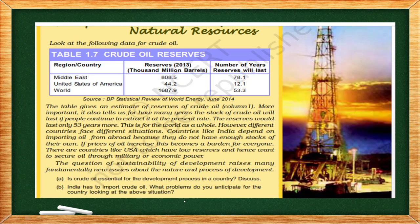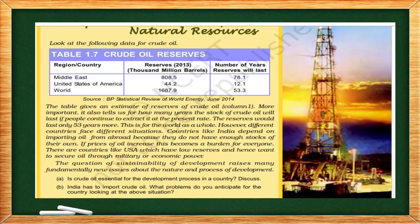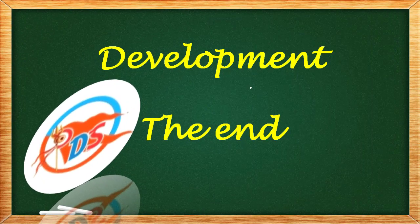This slide from your book shows natural resources data. In the Middle East, crude reserves are 808.5 thousand million barrels, which will last for 78.1 years. In the USA, oil reserves will last only 12.1 years, and for the whole world, only 53.3 years of oil reserves remain — after that, everything will be exhausted. That's why we must pursue development that saves resources for our future generation and protects the environment — that is sustainable development. I hope you were able to understand the chapter. This is the end of the chapter. Thank you. Jai Hind. Jai Bharat.